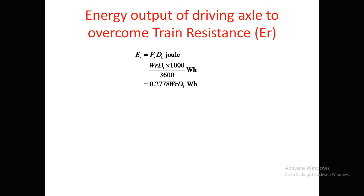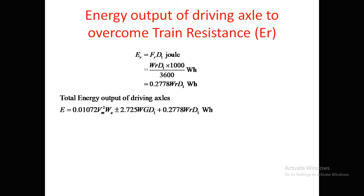The third case is energy to overcome train resistance including curve resistance, termed Er. Er equals Fr × D1, where Fr is the tractive effort to overcome train resistance. This gives Er = W·r·D1 × 1000/3600, which simplifies to Er = 0.2778 Wr·D1 watt-hours.